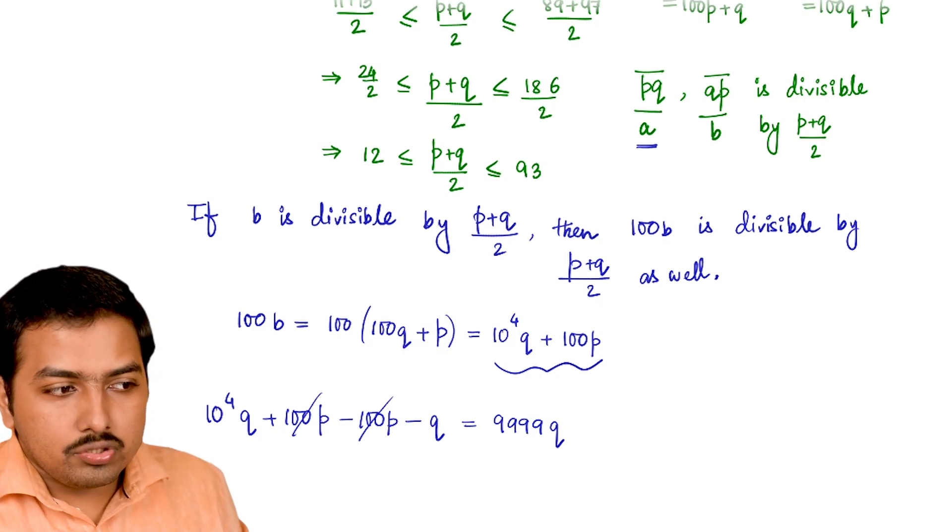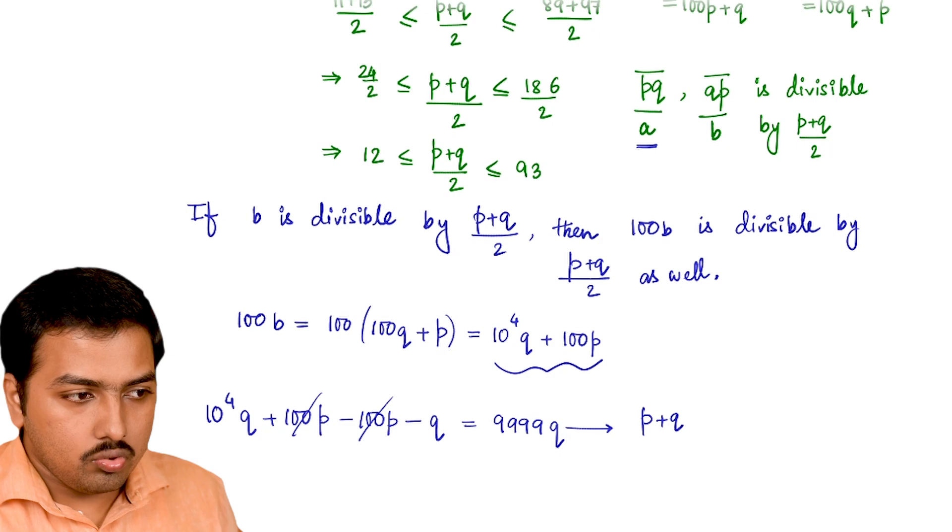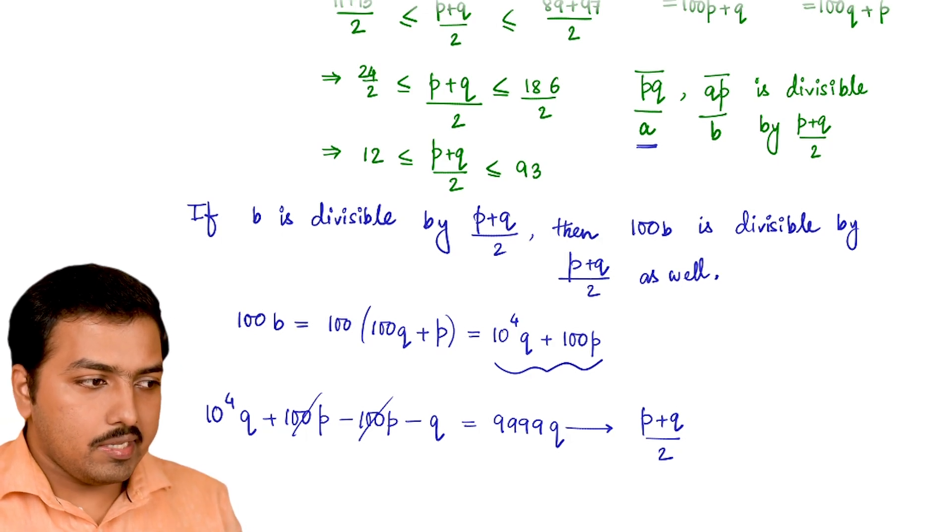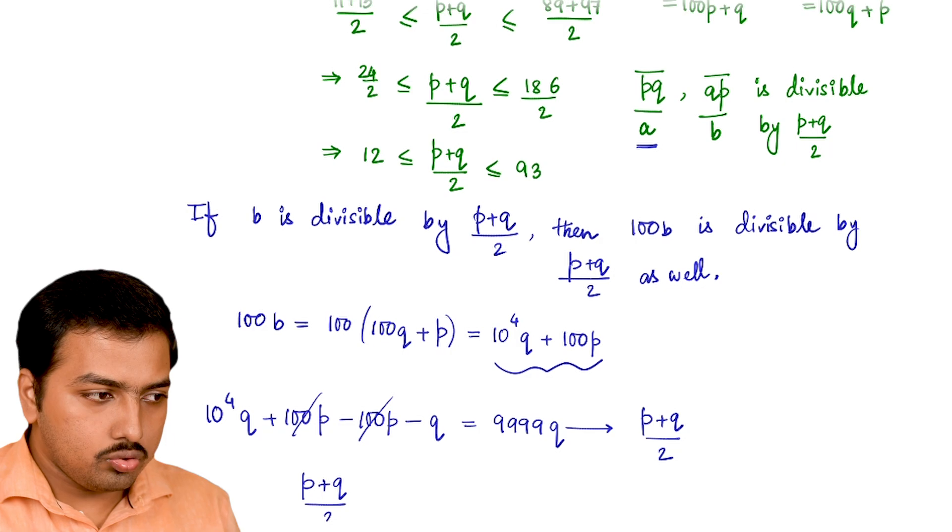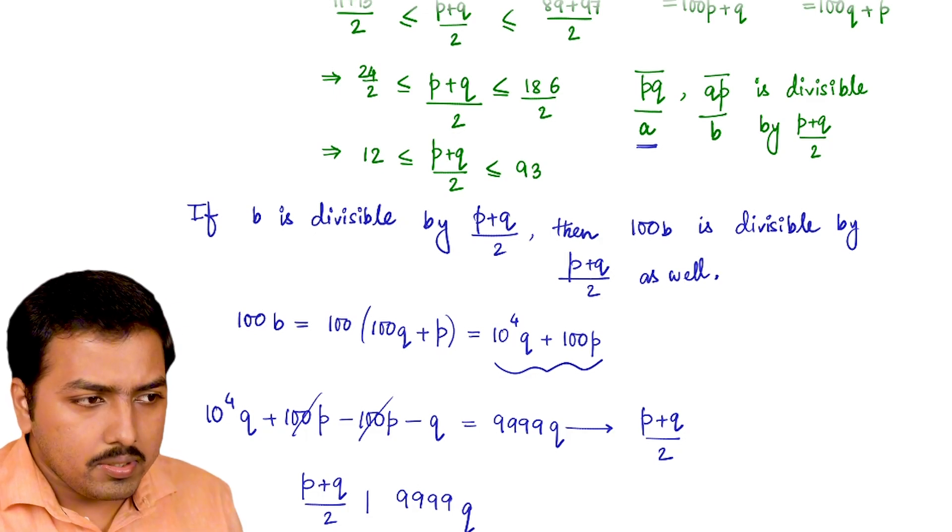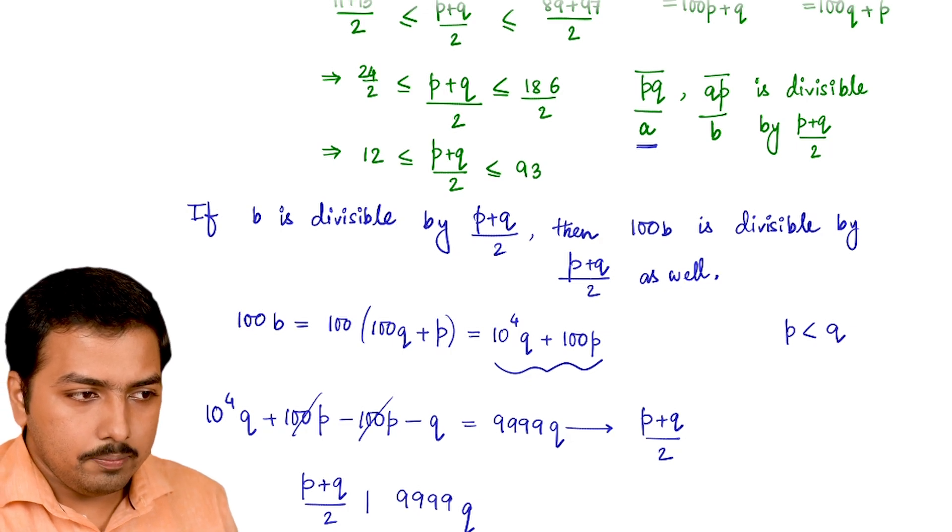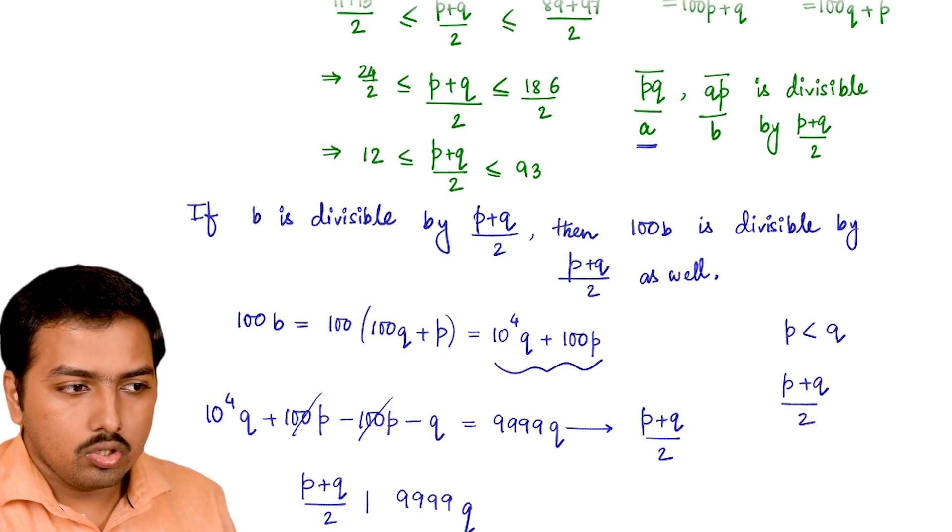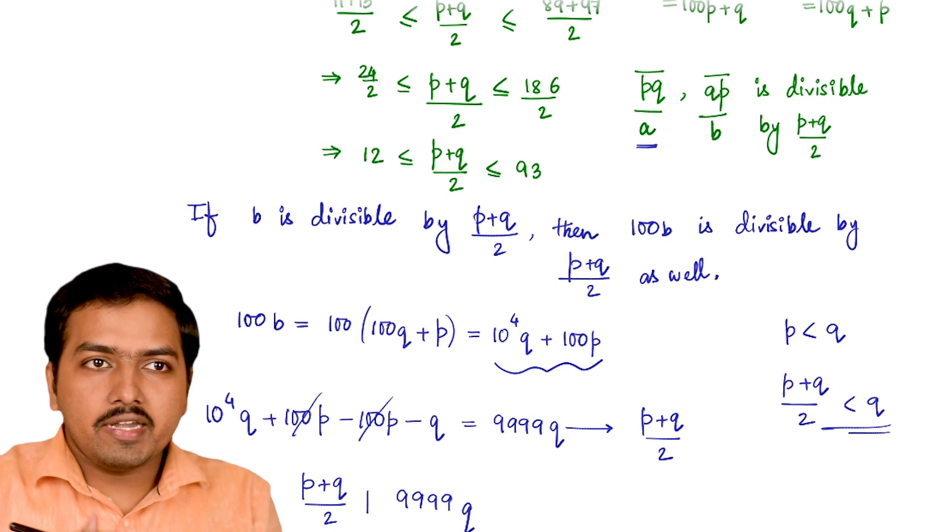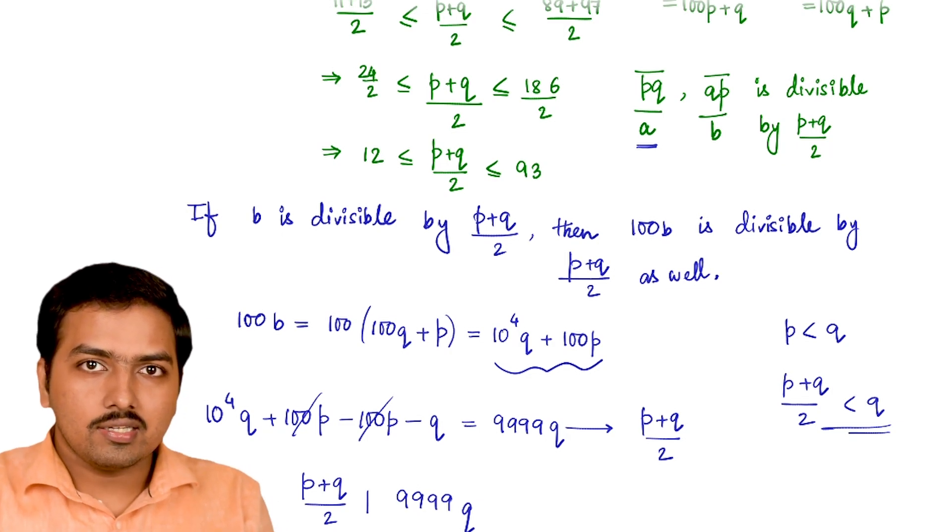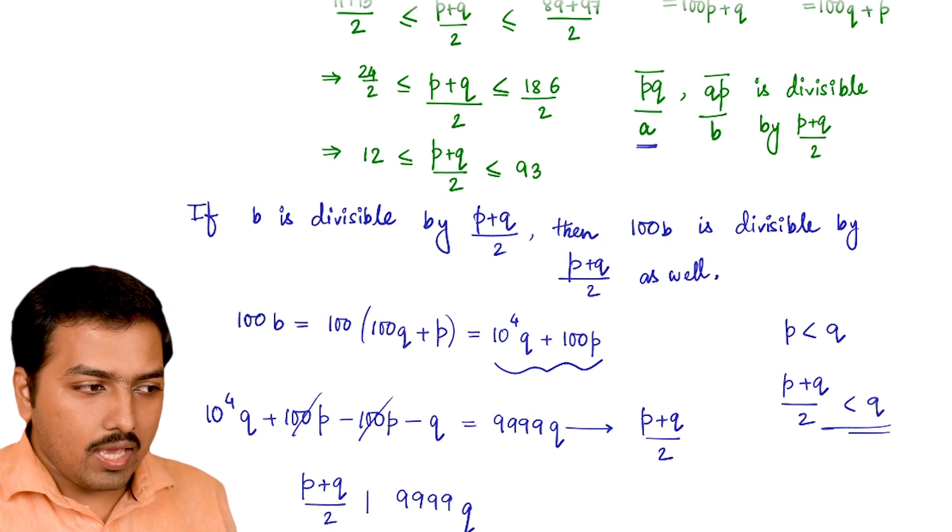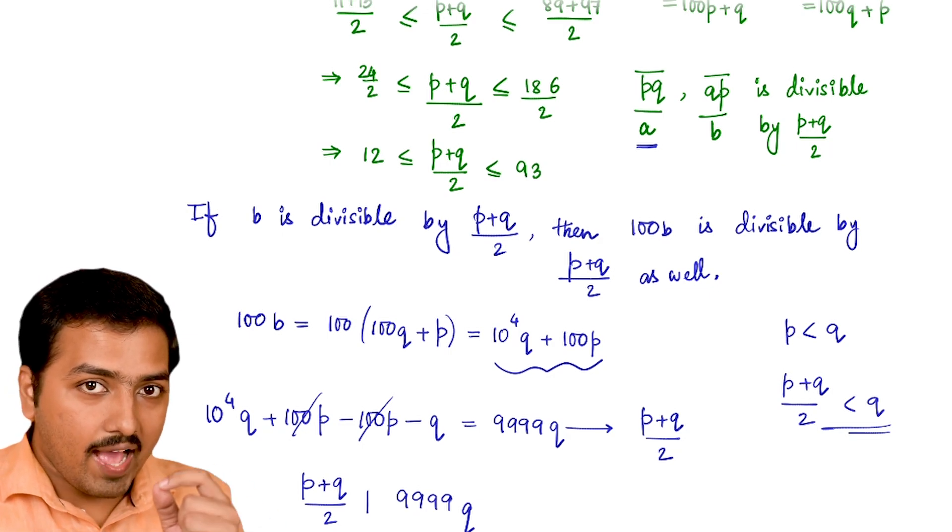Now, as per our assumption, this is going to be divisible by (p+q)/2. Observe very carefully that I am stating that (p+q)/2 divides 9999q. Definitely, as I'm assuming p is less than q, then (p+q)/2 is going to be less than q as well. If for two different numbers I'm finding the average of those two numbers, they are going to be lesser than the larger number for sure. So in that case, I would be able to say q and this average number of p and q has to be coprime to each other.